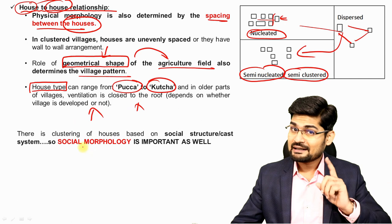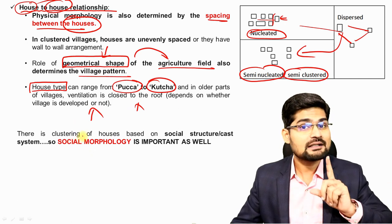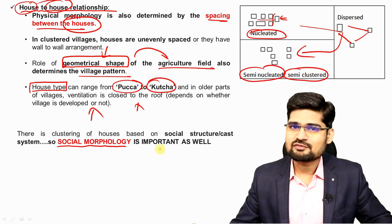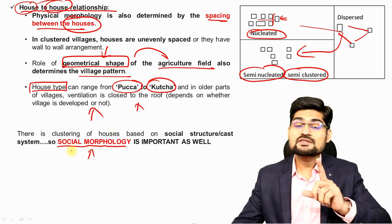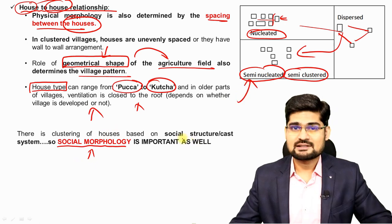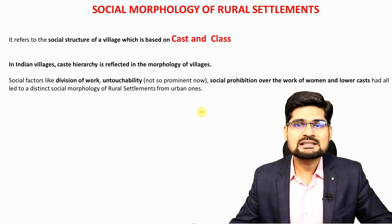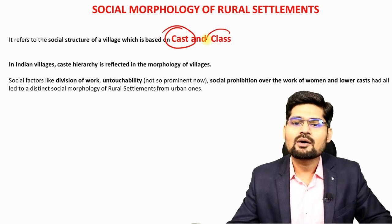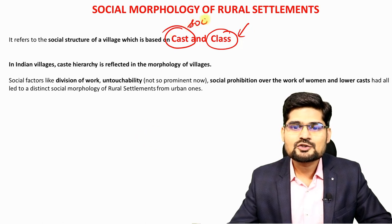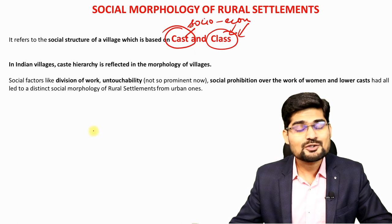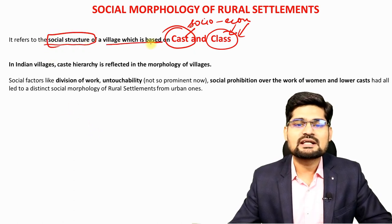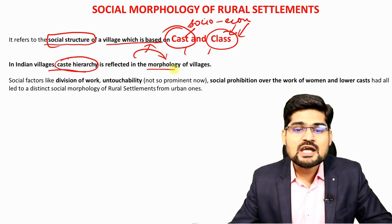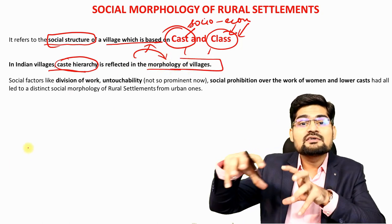Not just the physical, but socio-economic factors also play a key role. The second aspect of the classification of morphology is social morphology, which is very important in the creation of these shapes. Social morphology of rural settlements is determined by two major factors: one is the caste factor in the Indian context, and the other is the class factor in the world context. Class is economic; caste is social. Both refer to the social structure of a village where they play a very important role.